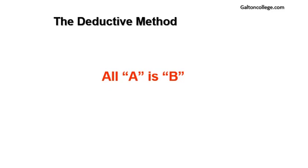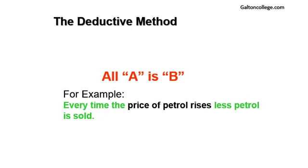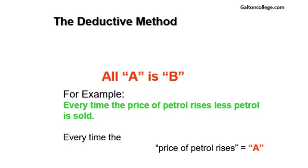Which takes us to the deductive method. Here we could say all A is B. Every time the price of petrol rises, less petrol is sold. All A, every time, all. The price of petrol, A. Less petrol is sold, B. We have a testable statement. It's not a dream or fantasy, this is actually a testable statement. We can get data and test it. But we have the problem of every time—all and every time are doing the same job here.